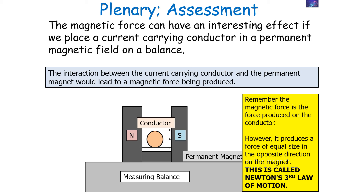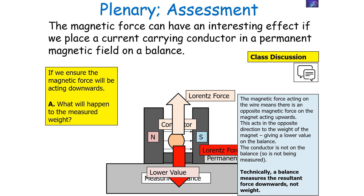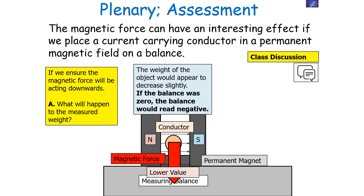Newton's third law states there are equal and opposite forces on two objects interacting with each other. If we place a magnetic force on the conductor acting downwards, there is an opposite magnetic force acting on the magnet acting upwards. This acts in the opposite direction to the weight of the magnet, giving a lower value on the balance. The conductor is not on the balance, so only the permanent magnet is being measured. The balance measures the resultant force downwards, and with an upward force on the magnet, this resultant decreases — if the balance was at zero, it would read a negative value.